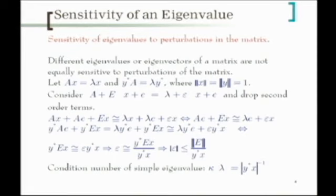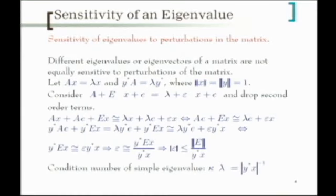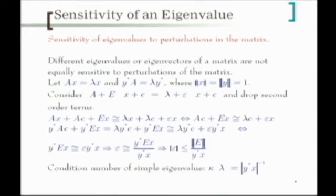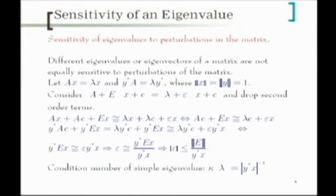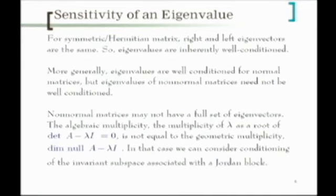This now has the nature of a condition number — it's a constant times the perturbation. If a left and right eigenvector are almost orthogonal to each other, so this denominator is almost zero while the vectors are normalized, then I have a very large perturbation even for a small E. This tells you two things: for a symmetric matrix, y*x is always one, so for a Hermitian or symmetric matrix, the eigenvalues are perfectly conditioned — the perturbation of the eigenvalues is of the same order as the perturbation of the matrix. But for a non-Hermitian matrix, eigenvalues can be very sensitive to perturbations. This is the condition number of a simple eigenvalue.